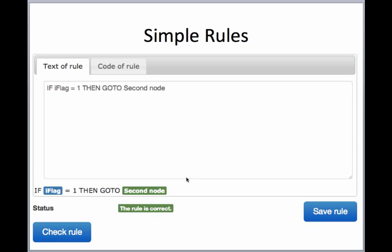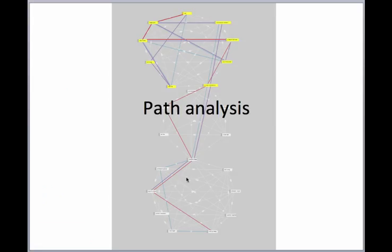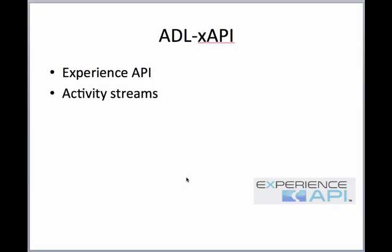The nice thing is we still have the simple stuff, so you can have logical jumps just with simple if-then-else rules. We've been moving much more into path analysis just so we can look and see how our players work through the cases, and that's both in OpenLabyrinth, but also using something called the XAPI, which is a way of extracting activity stream data to a whole bunch of learner record stores and other tool analytics.